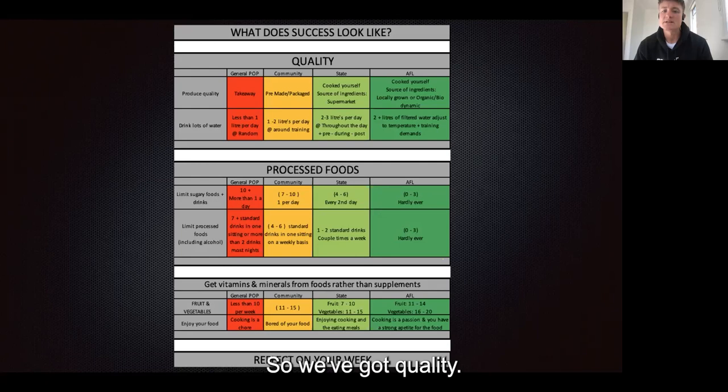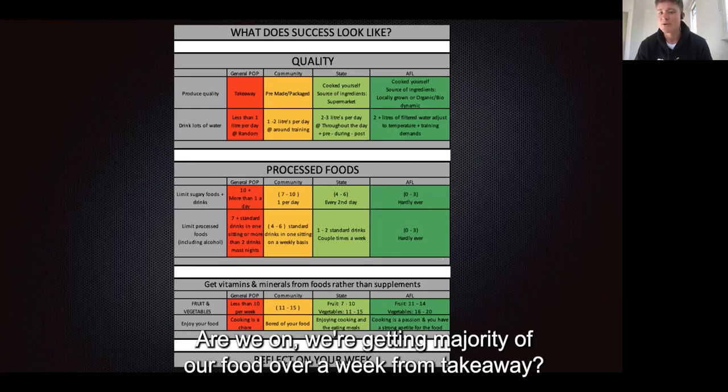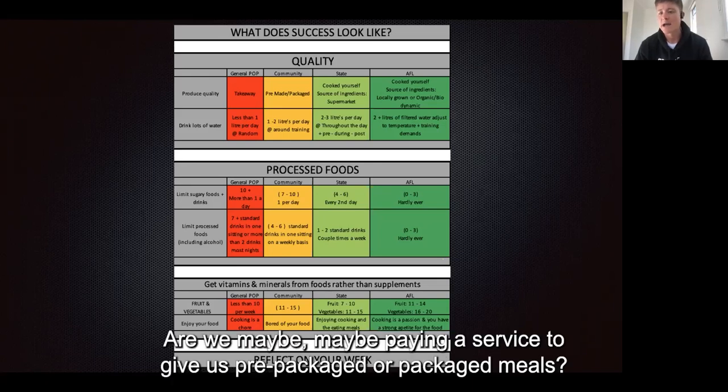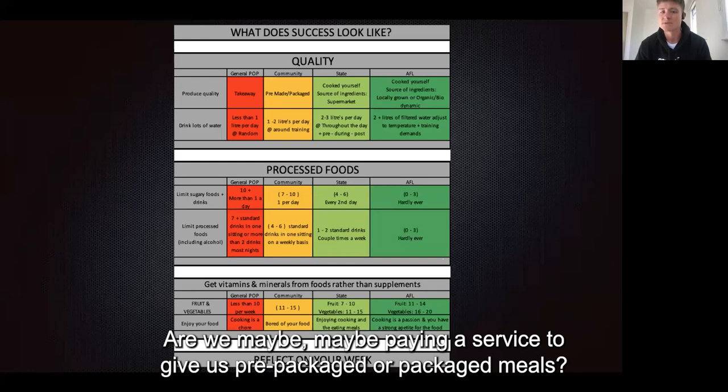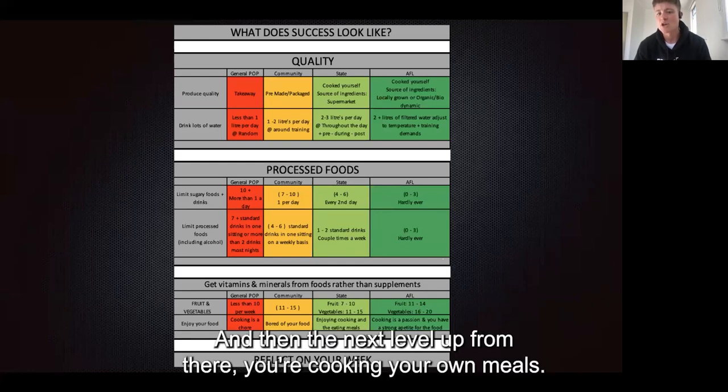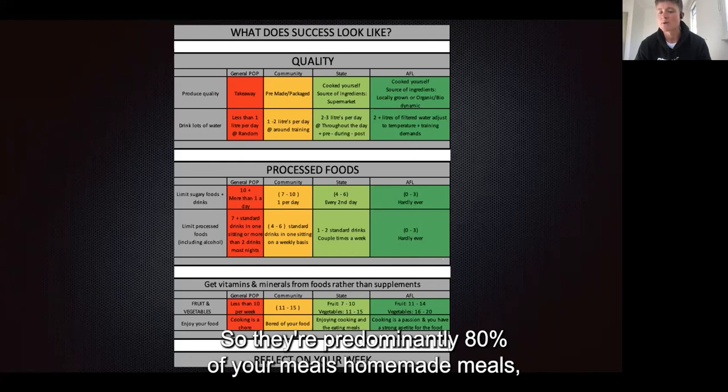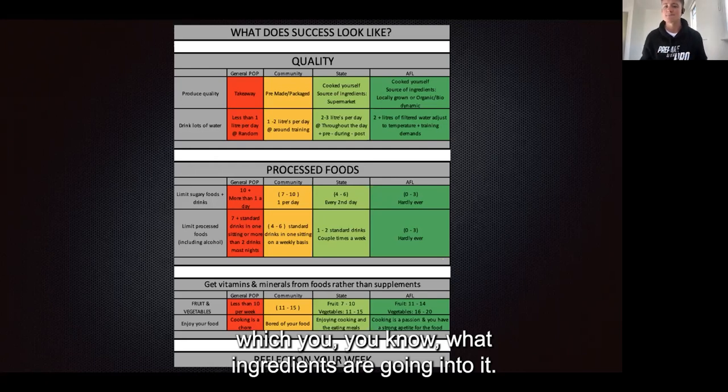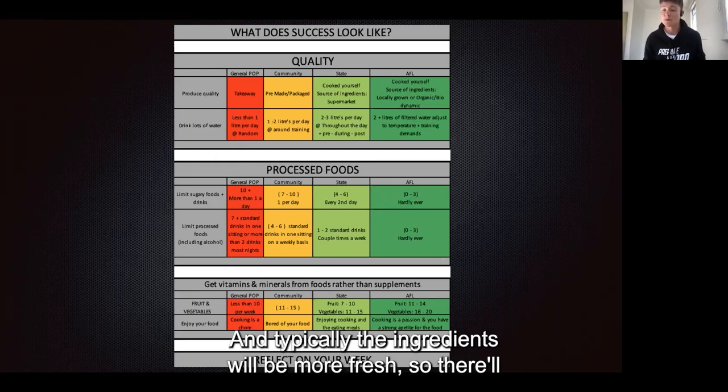We've got quality. So where are the ingredients coming from? Are we getting majority of our food over a week from takeaway? Are we maybe paying a service to give us prepackaged meals? The next level up from there, you're cooking your own meals. So they're predominantly 80% of your meals are homemade meals, which you know what ingredients are going into it. Typically the ingredients will be more fresh, so there'll be more nutrients in it.